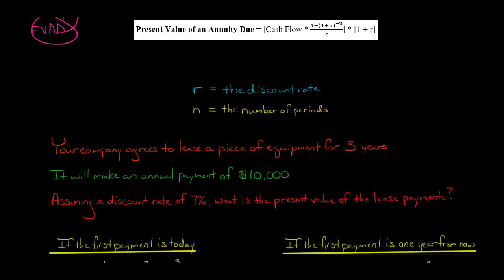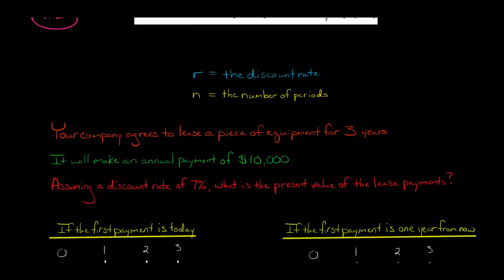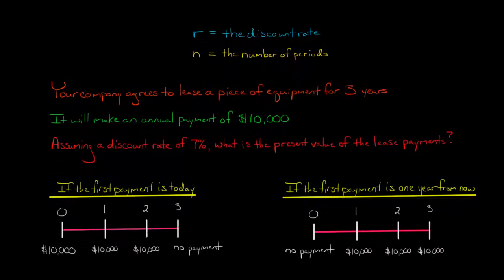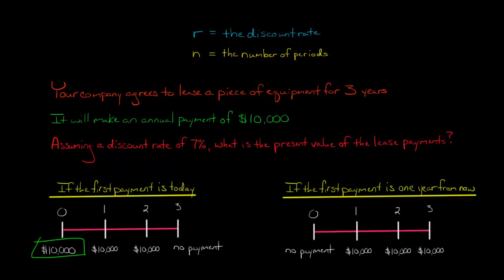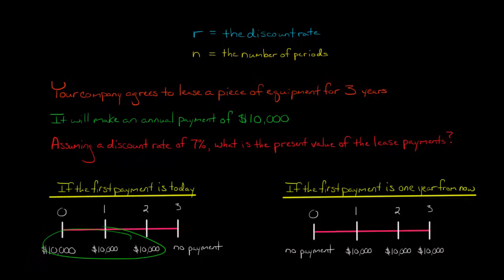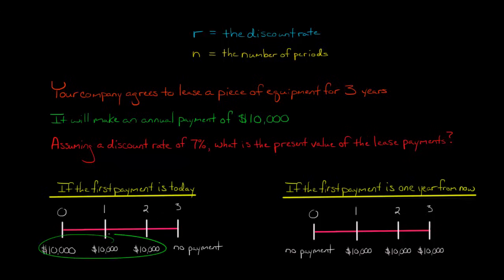Let's say we have a discount rate of 7% and we're trying to find the present value. Assuming the first payment occurs today — the company is leasing and has to make a payment right now — the stream of cash flows would be: $10,000 at period zero (today), $10,000 one year from now, and $10,000 two years from now. So three payments total, and at year three there is no payment because we've already made all three.